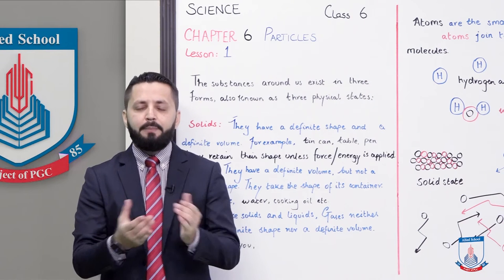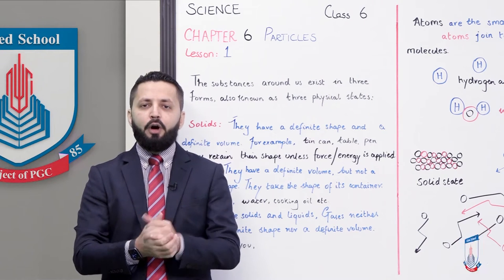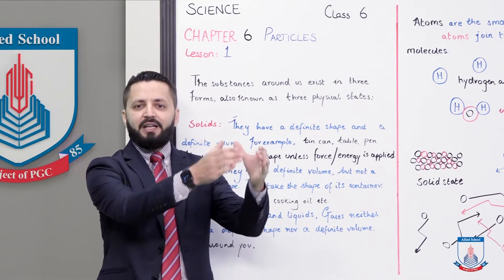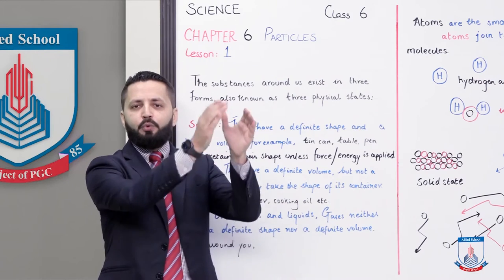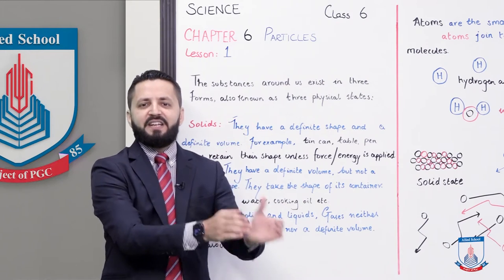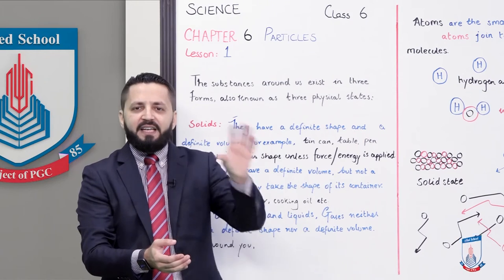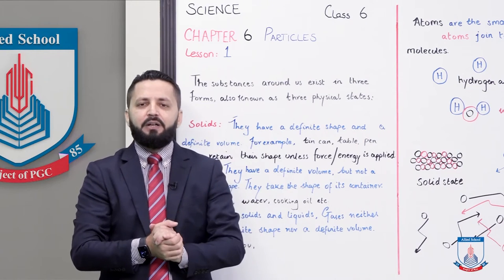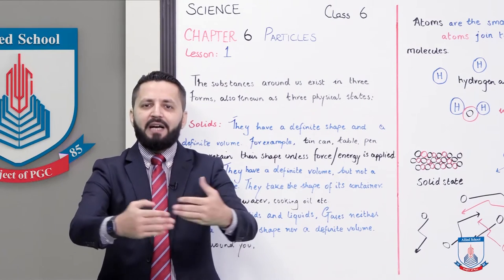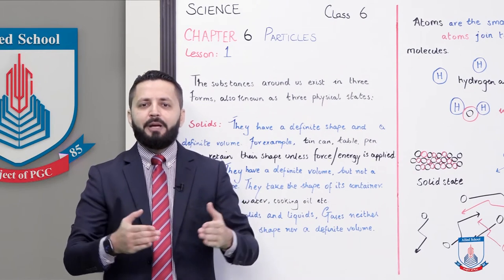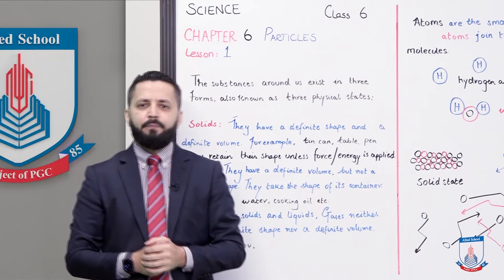Take cooking oil as another example. Cooking oil, as long as it is in its container, keeps that container's shape. When you pour it into a frying pan or sauce pan or any other container, it scatters completely and starts to take that container's shape.